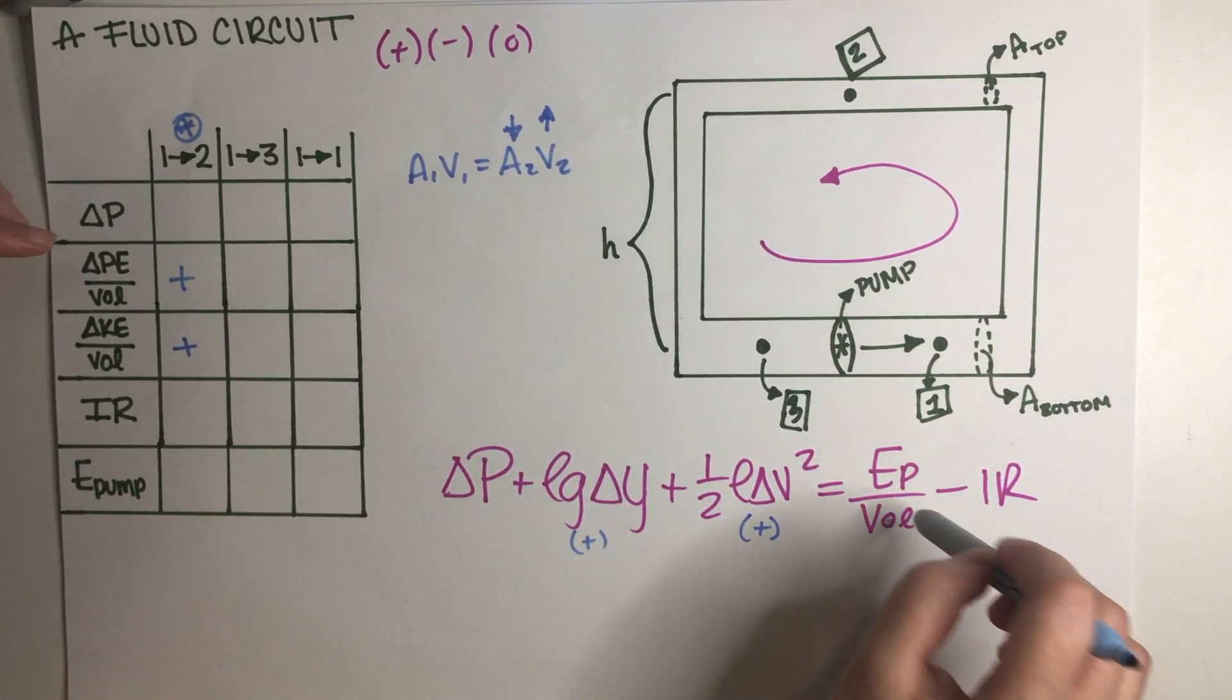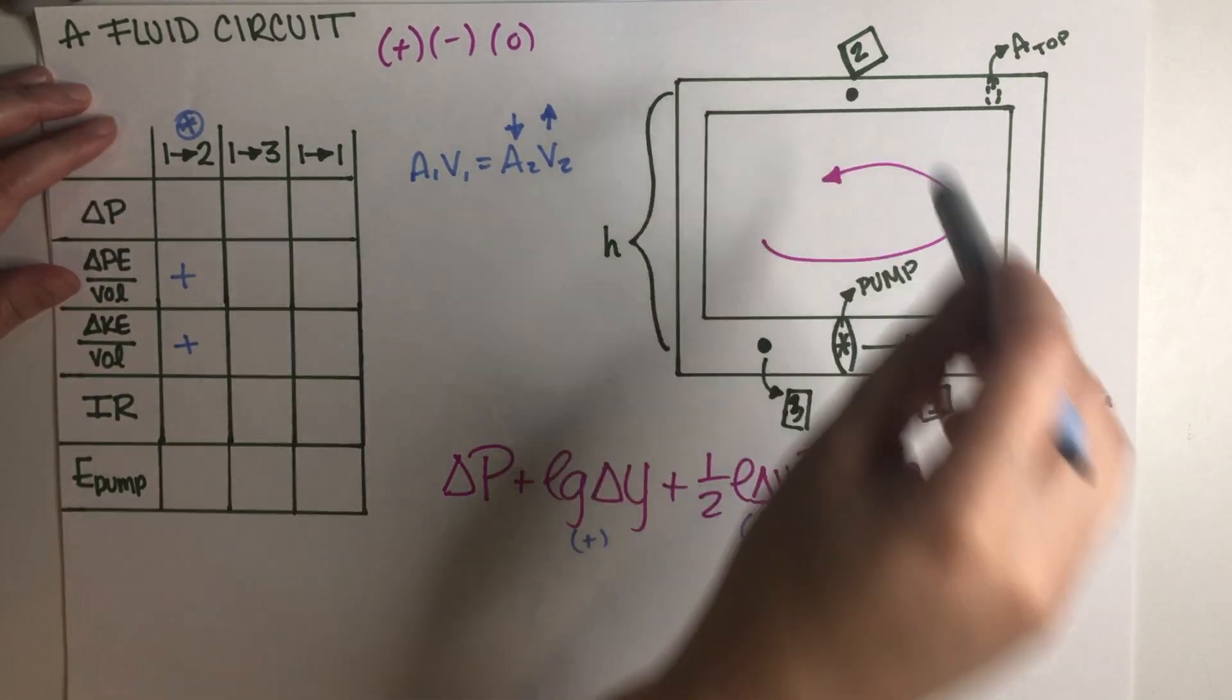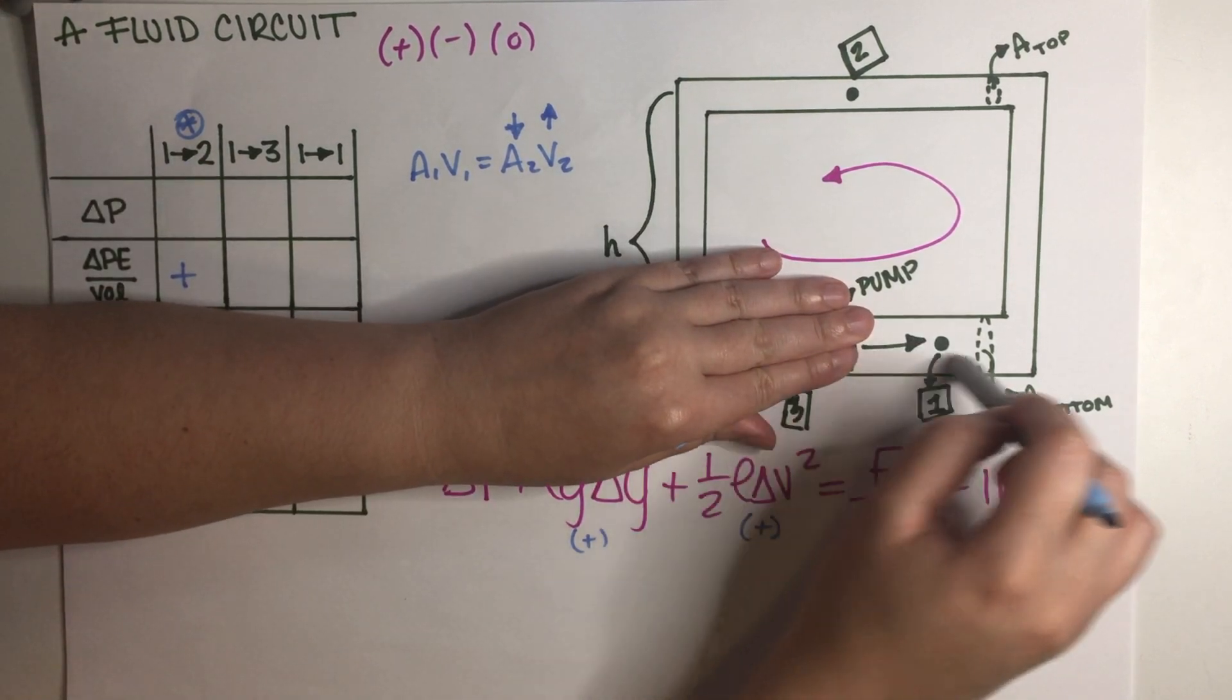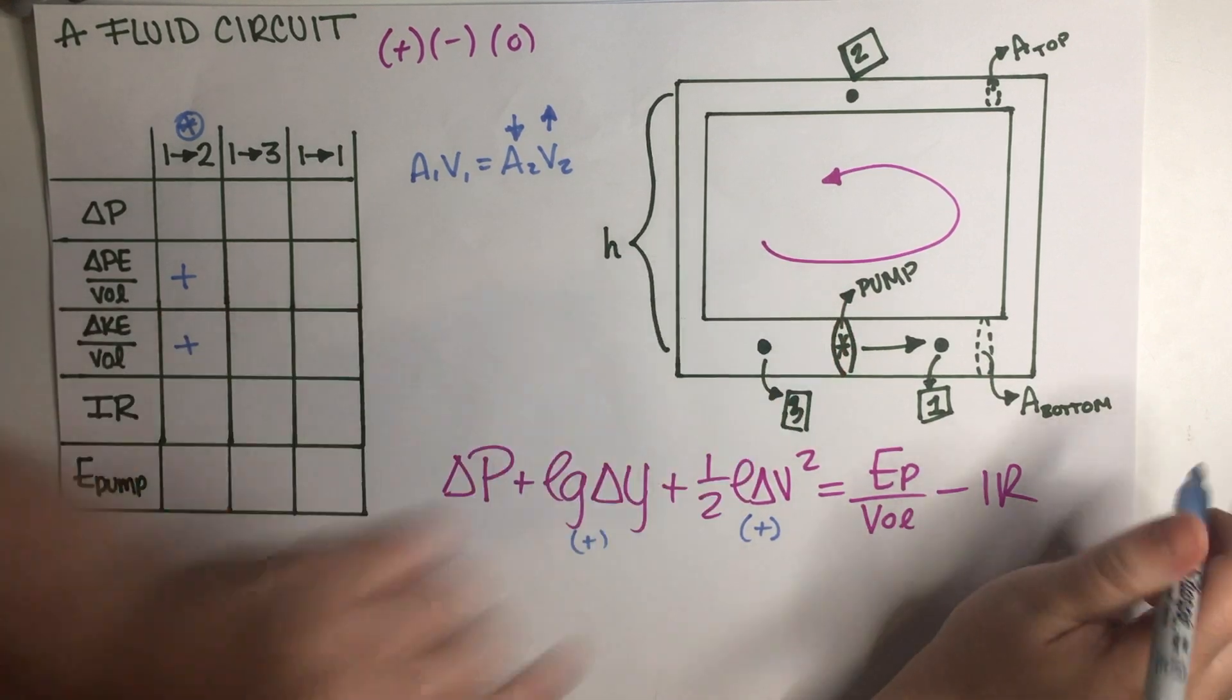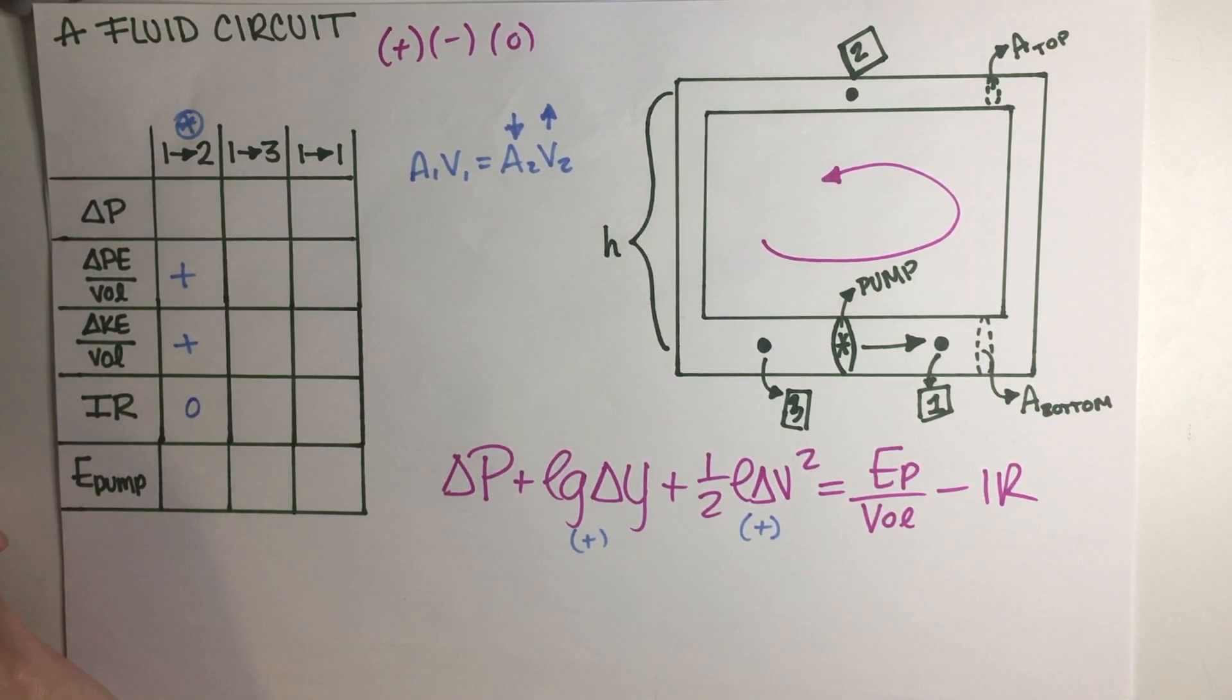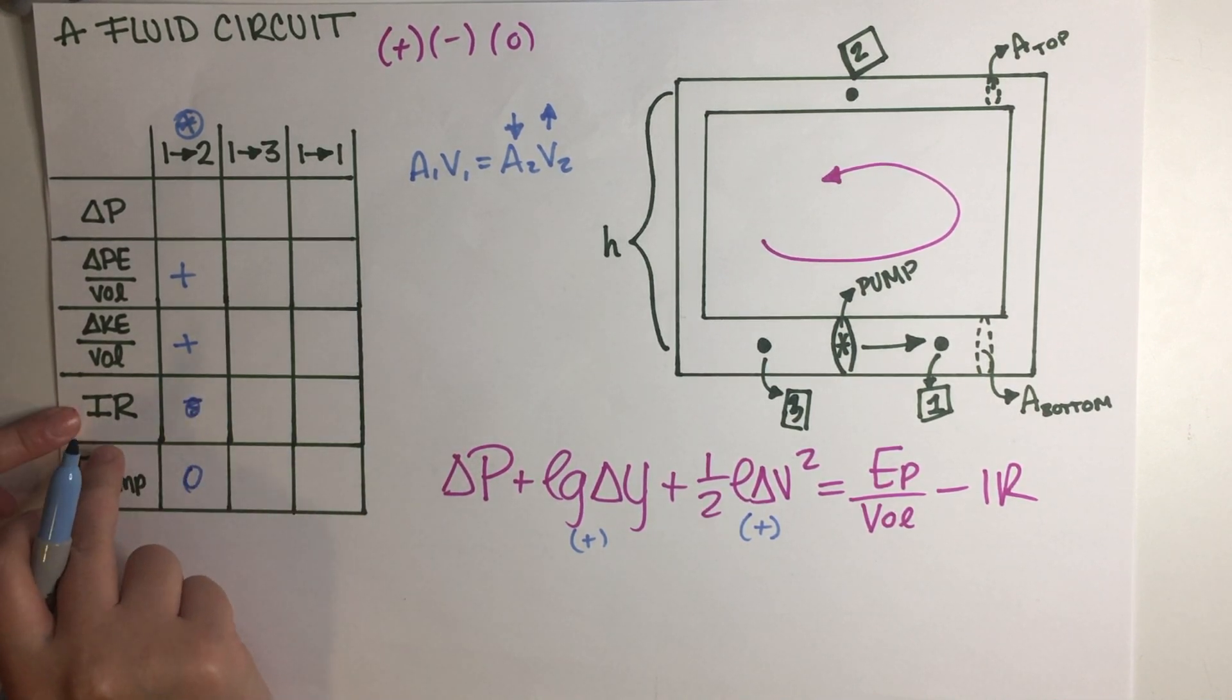Now there is no pump going from one to two because even though we have a pump over here if you start at one and then just follow the flow to two then you don't have a pump. So this is actually zero. And now we are left with—oh no, this is the pump right here. And now we're basically just left with the IR term.